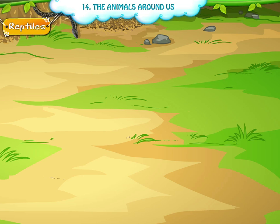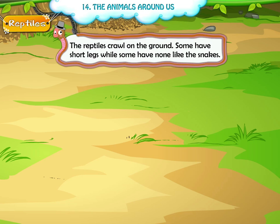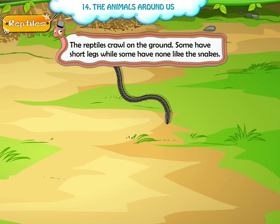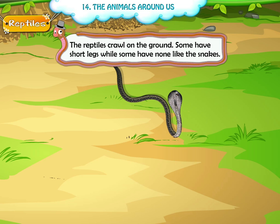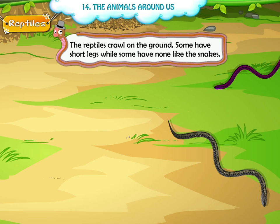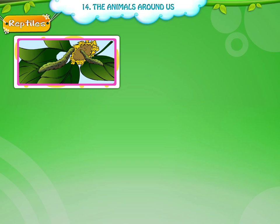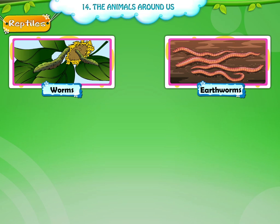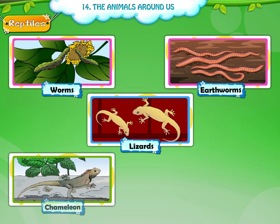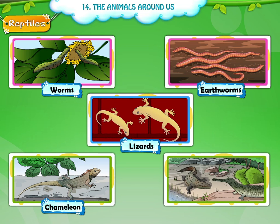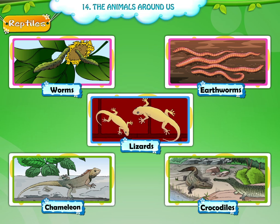Fourth, the reptiles or the crawling creatures. The reptiles crawl on the ground. Some have short legs while some have none, like the snakes. They are cold-blooded creatures. Worms, earthworms, lizards, chameleon and the crocodiles are some of the reptiles.